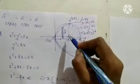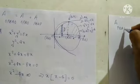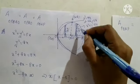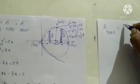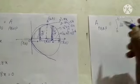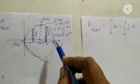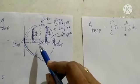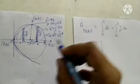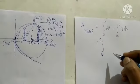Next we need to find the area of region PBAP. Taking a vertical strip with height y and length dx, this becomes integral 4 to 8 of y dx. The x-axis changes from P at (4, 0) to B at (8, 0), so the limit is 4 to 8. The curve for this region is the circle: x minus 4 all square plus y square equal to 16.